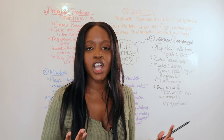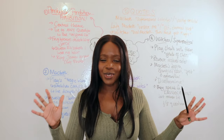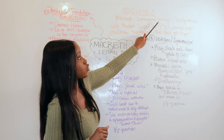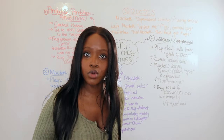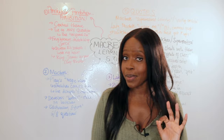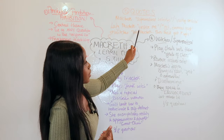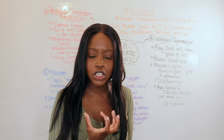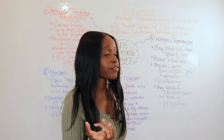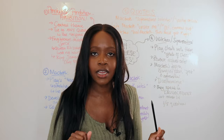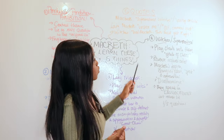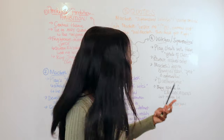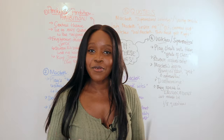Finally, number five: key quotes to remember. If you forget everything else, remember these. For Macbeth: his reference to 'supernatural soliciting' and his confession to 'vaulting ambition' — both tie into his character points. For Lady Macbeth: her famous 'unsex me here,' which shows her as the fourth witch and her complete transformation; and by Act 5, Scene 1, 'out, damned spot' — the hallucination before she commits suicide. For the witches: 'Hail Macbeth' followed by telling Banquo 'thou shalt get kings, though thou be none,' creating division between the two.